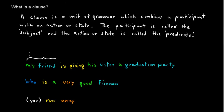Okay, my friend is giving his sister a graduation party. The participant is my friend. And what action in this case are we combining with my friend? The participant is going to give his sister a graduation party. And this is the predicate.